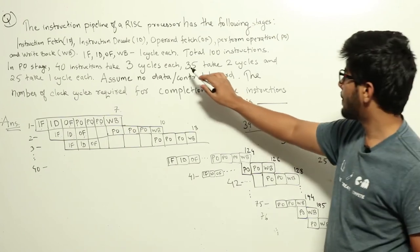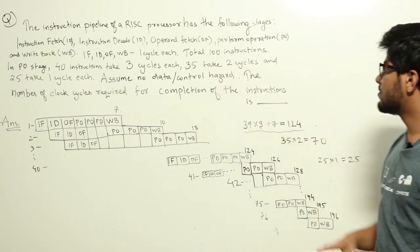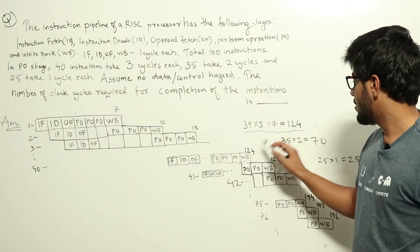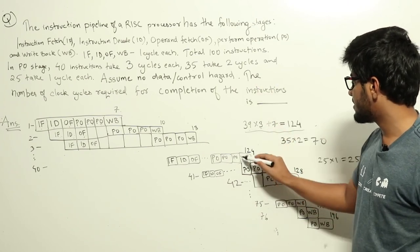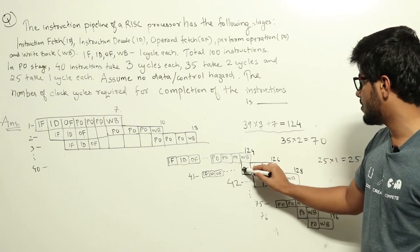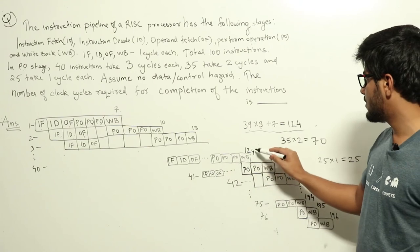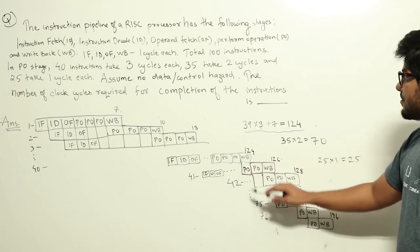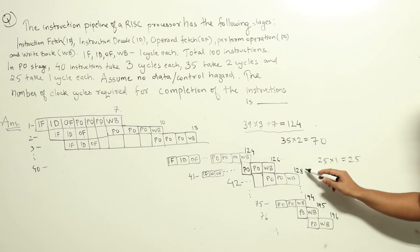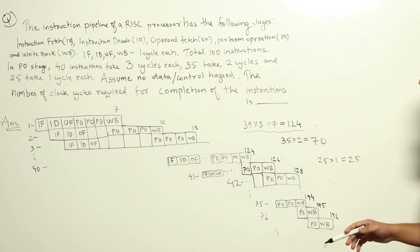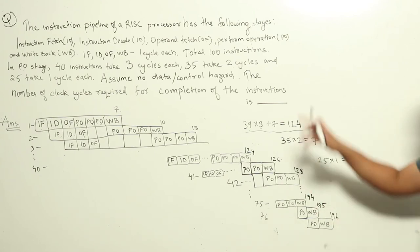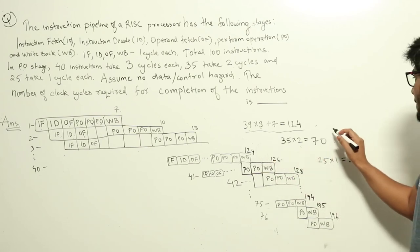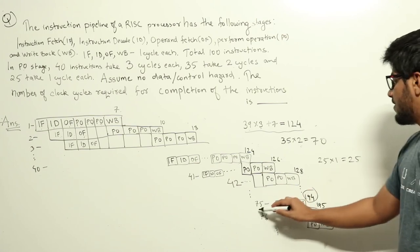Next we handle instructions that take two cycles for perform operation. Instruction fetch, decode, and operand fetch can be overlapped, but perform operation can only start after the perform operation of the 40th instruction completes. It takes two cycles, then write back — adding two additional cycles. Similarly, each of the 35 instructions with two-cycle perform operations adds two cycles each: 35 × 2 = 70 additional cycles. Adding to 124, we get 194 cycles total up through the 75th instruction.